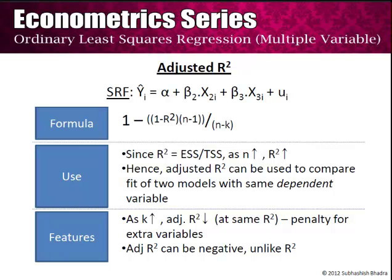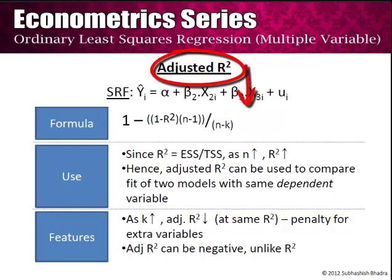Looking at the formula, as k increases, i.e. as the number of explanatory variables increases, adjusted R-square will decrease for the same R-square and the same n. Hence this is the penalty for extra variables. Adjusted R-square can also be negative, unlike R-square which always has to be positive. Hence adjusted R-square is a good method of comparing two different models and actually penalizing an econometric student for adding multiple variables.